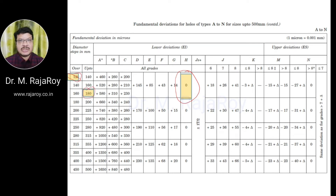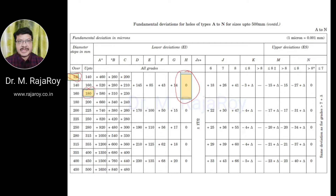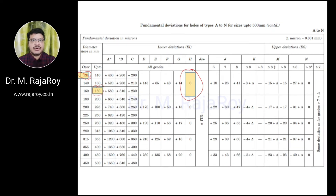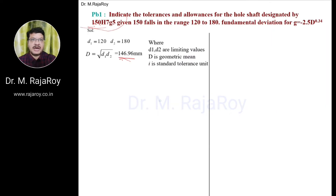That means over 120 and up to 180 is the limit, so 150 falls above 120 — meaning from 121 up to 180. From 181 onwards that comes under the next limit. In this way, from this table you get the limiting values.